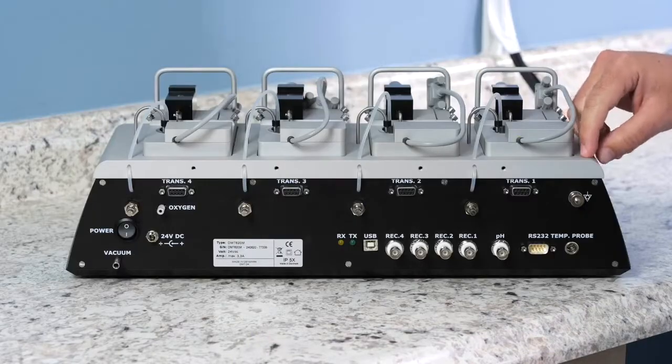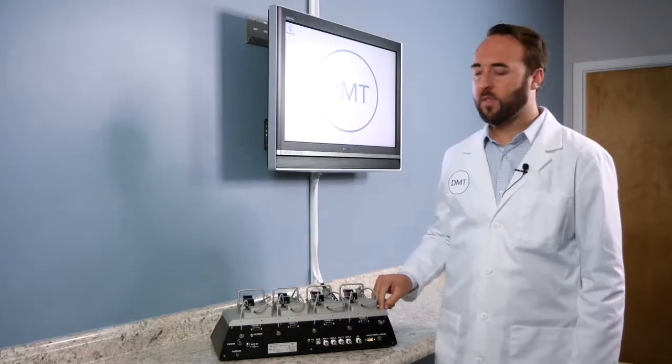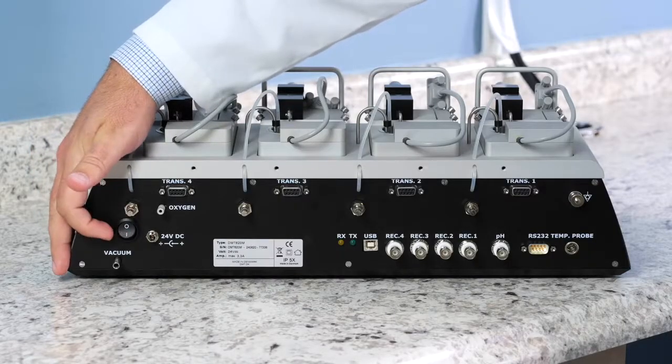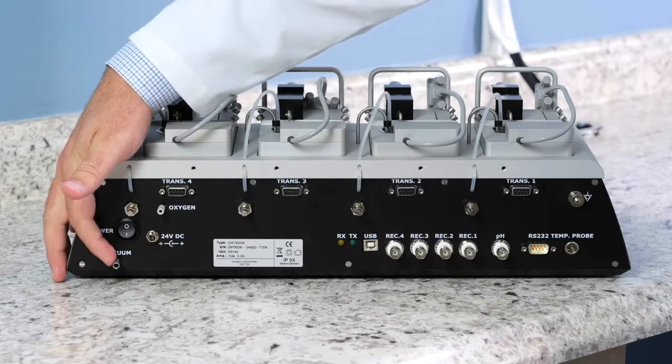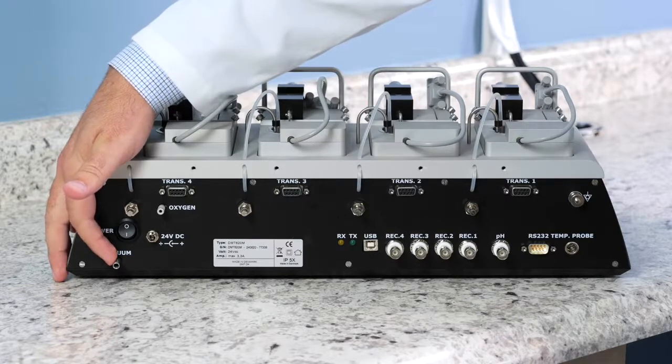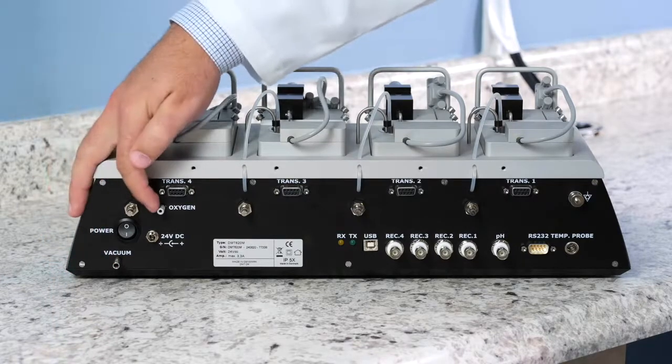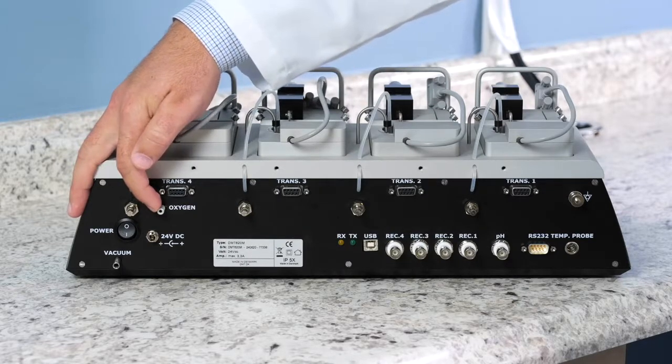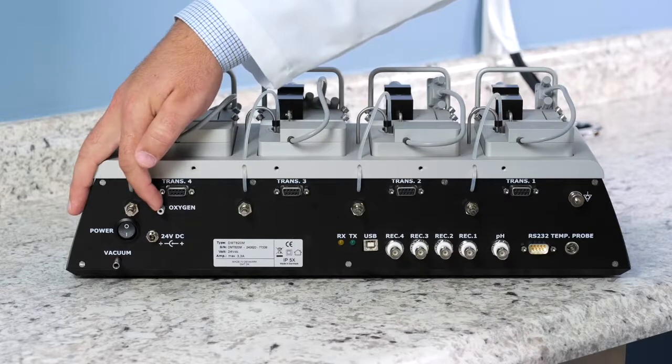The back of the interface has all the connections needed to fully utilize the system. There is a power supply and a power switch. There's a port for vacuum that you can connect to a vacuum source for buffer removal. There's an oxygen port that you can connect to a carbon tank or any other mixture that you would like to use to bubble your chambers.